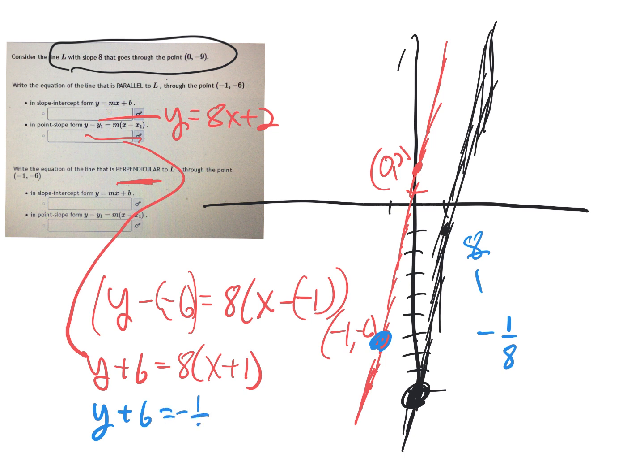So if I'm looking for the perpendicular line and I've got the point-slope form, I just have to change that slope, go through that same point (-1, -6). So that's supposed to be -1/8, so I'm done. That is this answer, and that's the beauty of point-slope form.